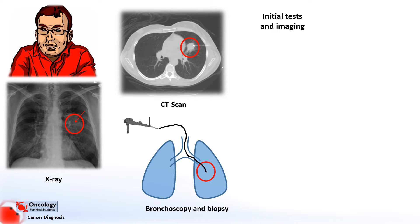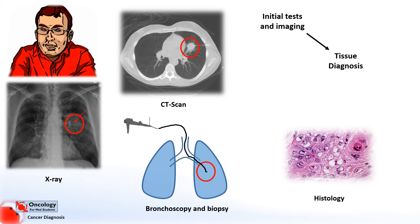The sample which is taken is then sent to the lab, where a specialist doctor called a histopathologist looks at the sample to see if there are any cancer cells present. Unfortunately, in this gentleman's case, the histopathologist has confirmed that he has a squamous cell carcinoma — a type of cancer — in his left lung.